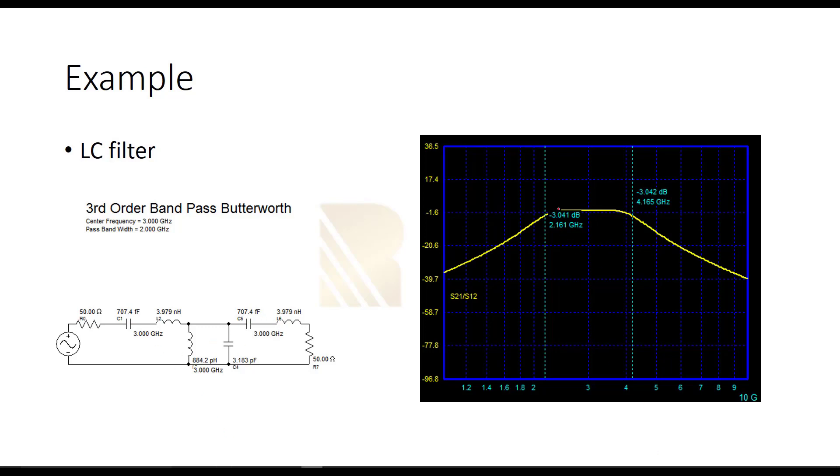Let's take a look at the response. As you see here, I'm measuring the bandwidth. This part is minus 3 dB and minus 3 dB from 2 GHz to 4 GHz means that it has a 2 GHz bandwidth and the center frequency is 3 GHz.